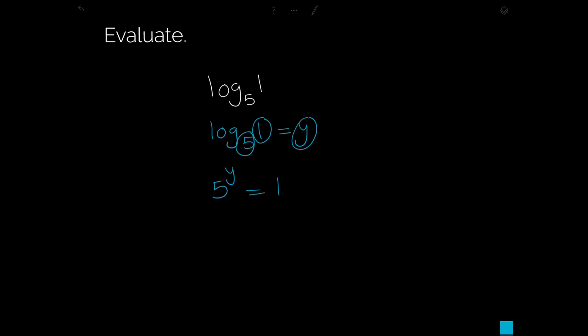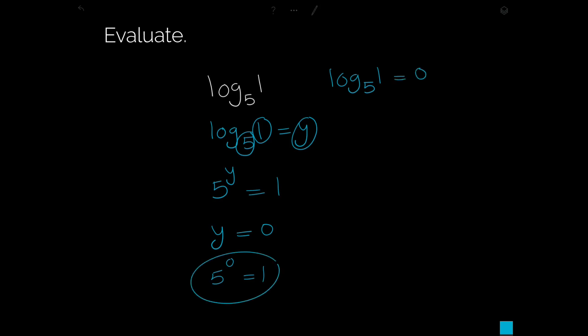Now think of an exponent that, when 5 is raised to it, gives you 1. A base raised to a power equals 1 if and only if the exponent is 0. So y equals 0, and 5 to the power of 0 equals 1. Therefore, log base 5 of 1 equals 0.